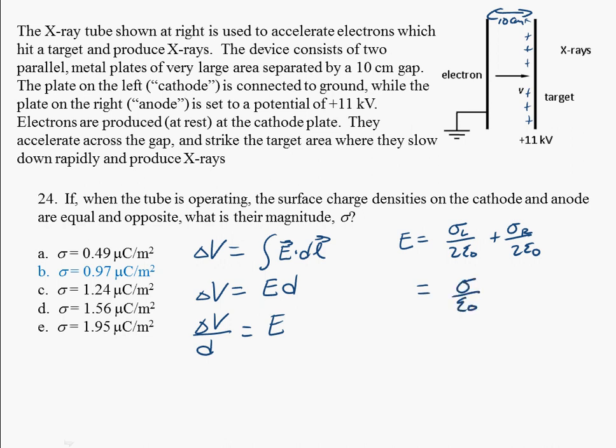Setting these two things equal to each other, we get that the potential difference times epsilon naught divided by D should give us the charge density. If we plug those numbers in, we do in fact find the answer to be 0.97 microcoulombs per square meter.